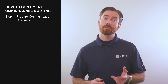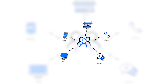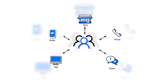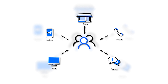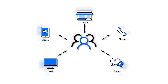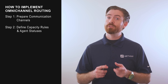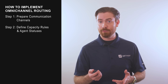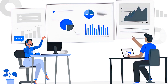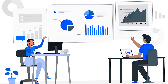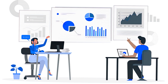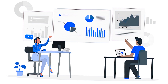Now we'll cover how to implement Omni-Channel Routing. Step 1: Prepare Communication Channels. Once you've researched and determined which channels to offer, you will need to ensure that your company has a presence on those channels. Step 2: Define Capacity Rules and Agent Statuses. Many contact center software providers allow you to set agent capacity rules in order to balance the workload among agents.